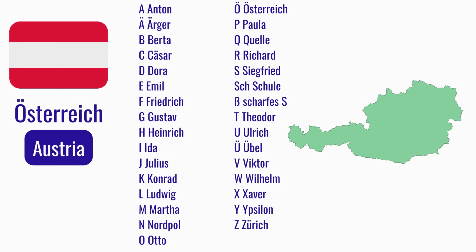Auch beim österreichischen Buchstabieralphabet sagen wir den Buchstaben und dann 'wie' und den Namen. A wie Anton. Ä wie Ärger. B wie Bertha. C wie Cäsar. D wie Dora. E wie Emil. F wie Friedrich. G wie Gustav. H wie Heinrich. I wie Ida. J wie Julius. K wie Konrad. L wie Ludwig. M wie Martha.